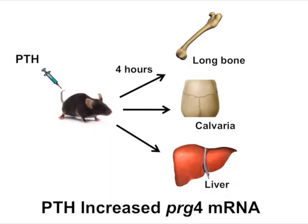Our microarray data was confirmed via in vitro and in vivo quantitative real-time PCR studies, where PTH was found to maximally upregulate PRG4 expression in long bone, calvaria, and liver.